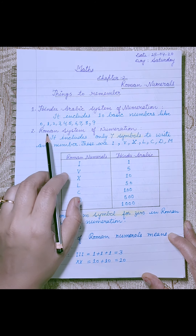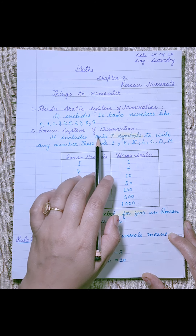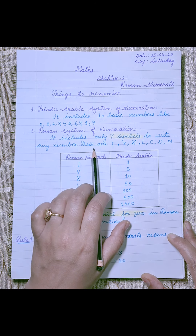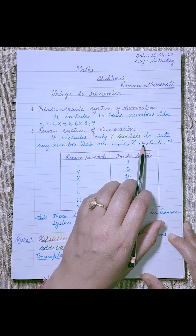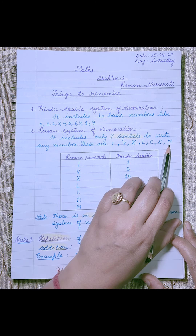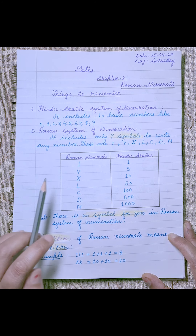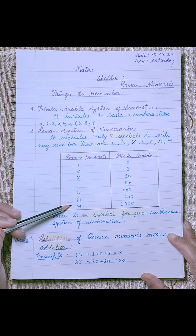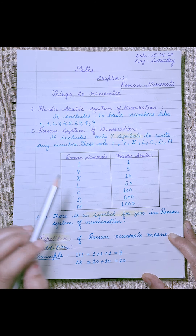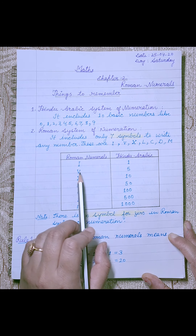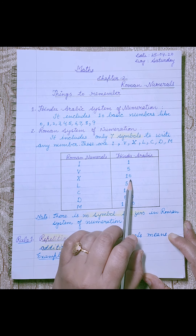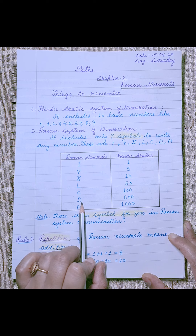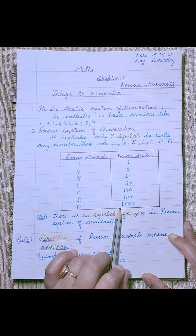Next is the Roman system of numeration. It includes only 7 symbols to write any number. These are I, V, X, L, C, D, and M. These Roman numerals correspond to Hindu-Arabic numbers: I means 1, V means 5, X means 10, L means 50, C means 100, D means 500, M means 1000.